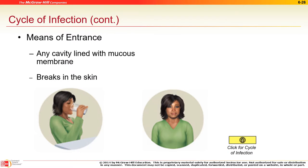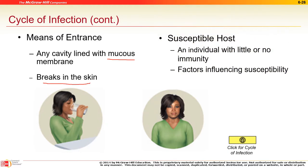Means of entrance for the flu include mucous membranes: the conjunctiva in the eyes, nasal mucous membranes, and the mouth — thin skin that allows direct passage. Also breaks in the skin, cuts, and abrasions, and sometimes through the GI tract. The host must be susceptible — if you're vaccinated, you're often no longer susceptible and won't get the disease.